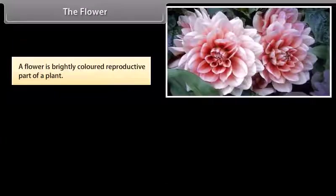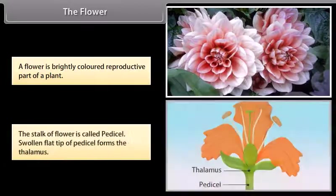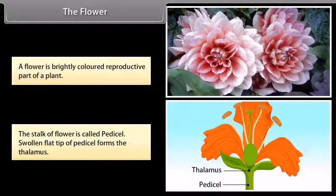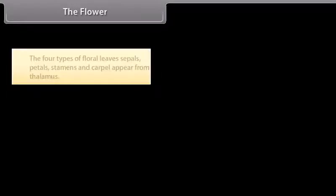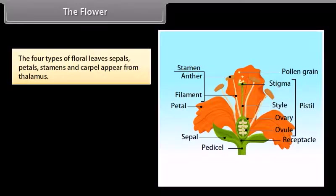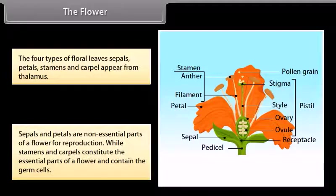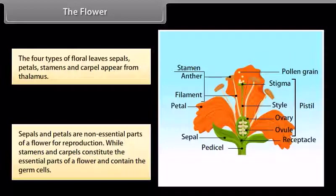A flower is a brightly colored reproductive part of a plant. The stalk of the flower is called pedicel. The swollen flat tip of the pedicel forms the thalamus. The four types of floral leaves — sepals, petals, stamens, and carpels — appear from the thalamus. Sepals and petals are non-essential parts for reproduction, while stamens and carpels constitute the essential parts and contain the germ cells.